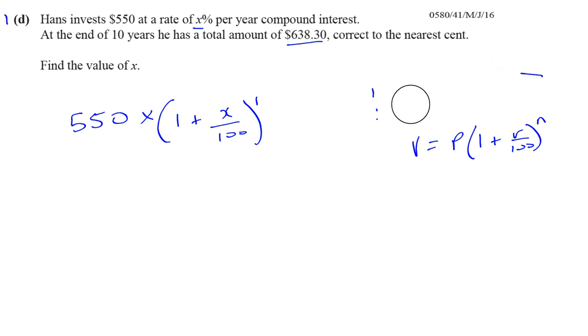So let me just get rid of all of this stuff here. Now, we know that at the end of 10 years, after this becomes the rate to the power of 10, he's going to have 638.30 at the end of those 10 years. So, the total amount he has in his account is this much. And that's what this compound interest formula tells us. It tells us the whole new amount increases by this percentage this number of times.